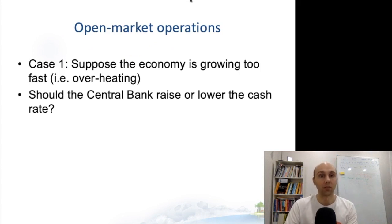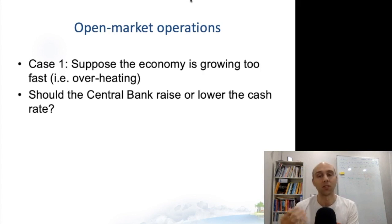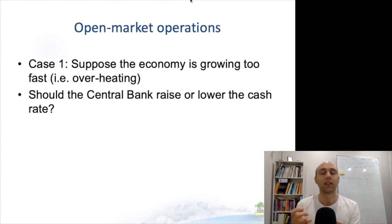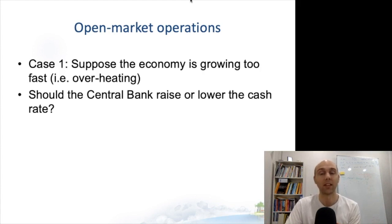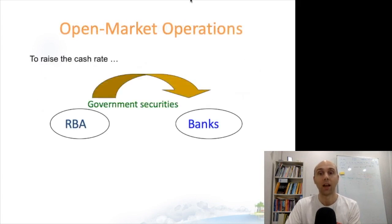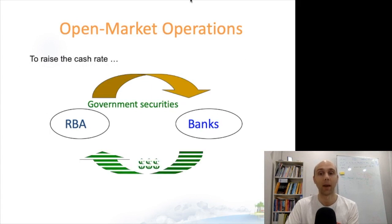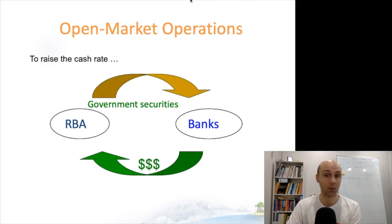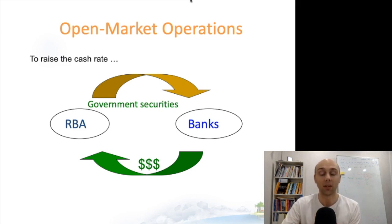Imagine the economy is growing too fast — it's overheating. The central bank wants firms to pull back on investment and households to pull back on consumption. So it increases the interest rate: with higher interest rates, firms are less likely to borrow to invest, and households are more likely to save rather than spend. To do this, the RBA sells government securities to banks. The banks buy them using cash, decreasing their reserves, increasing the chances they need to borrow in the overnight market, which puts upward pressure on the price of borrowing money — the end result being an increase in interest rates.